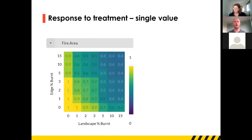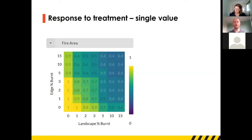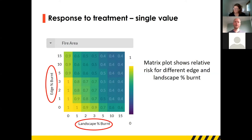So here's the first thing you can look at — a particular value or effect of fire, in this case the area of a wildfire. We call this a matrix plot. On the X-axis is the rate of prescribed burning in the landscape, and on the Y-axis is the rate of prescribed burning at the edge — closer to where people and houses are. It's a relative scale starting at one. If you get a decrease in risk for treatment, that number decreases; if you get an increase in risk — more common for some environmental values — that number increases.